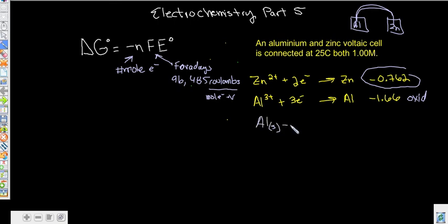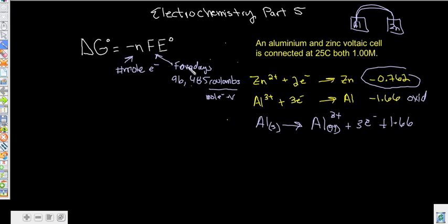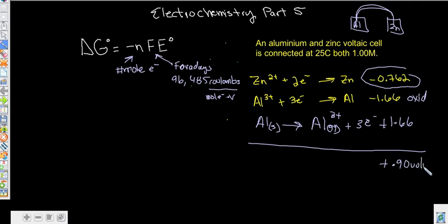Zinc is closer to a positive number, so zinc is going to be reduced and we leave that one the same. We assume aluminum is going to be oxidized, so it switches around and the sign changes. Aluminum in solid form turns into aluminum aqueous three-plus plus three electrons, and that means its potential becomes positive 1.66. So now we can figure out our E° — our voltage at standard conditions — by adding 1.66 to 0.762, giving us a total of positive 0.90 volts.